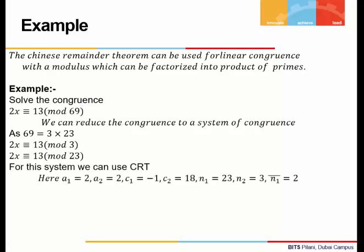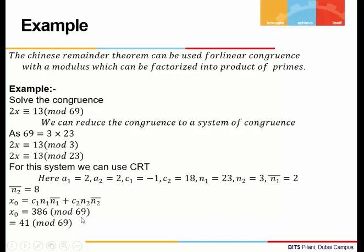For this, when we use the Chinese remainder theorem, we see that our a₁ is 2, a₂ is 2. c₁ = -1 satisfies this congruence, and 18 satisfies the second congruence, so c₂ = 18. n₁ = 23 and n₂ = 3, and the bars: n₁ bar = 2 and n₂ bar = 8. This will give us the solution as 386 mod 69, or it is congruent to 41 mod 69.